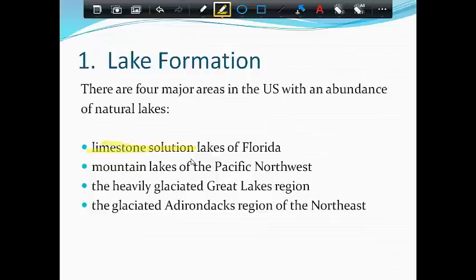The mountain lakes of the Pacific Northwest were formed by mountain ranges rising and falling. The glaciated lakes that we have in our area means they were formed by glaciers. And then some other glacier formed lakes near the Adirondack Mountains in northeast United States. So they all were formed a little bit differently.